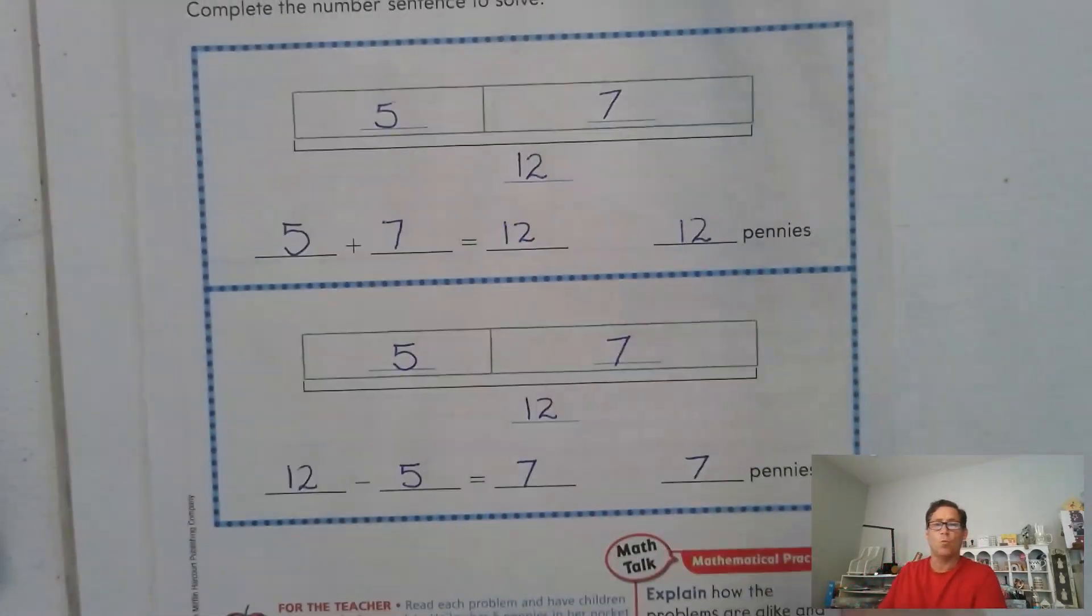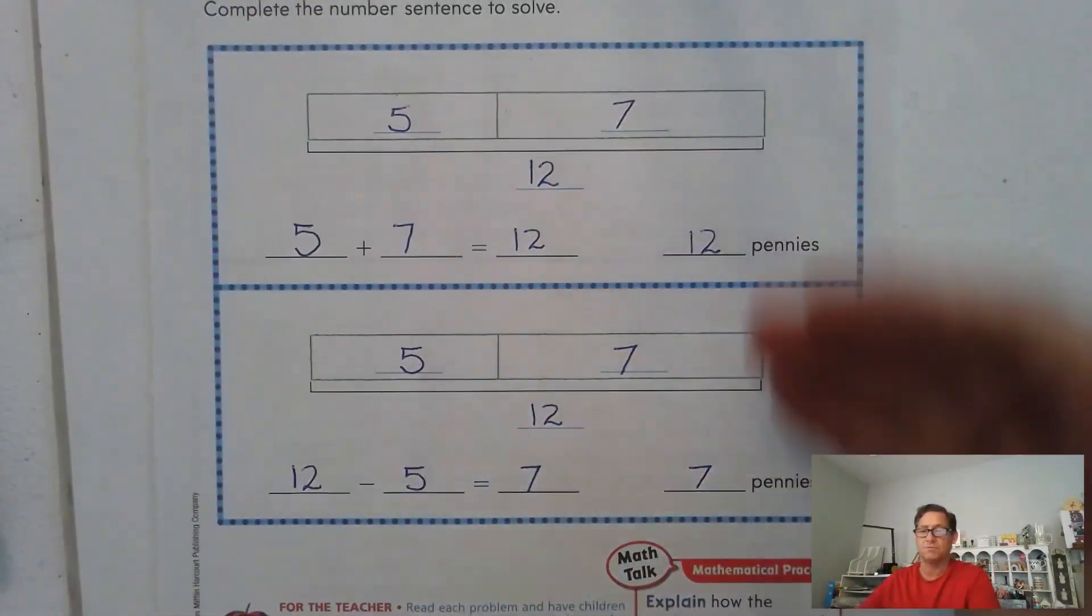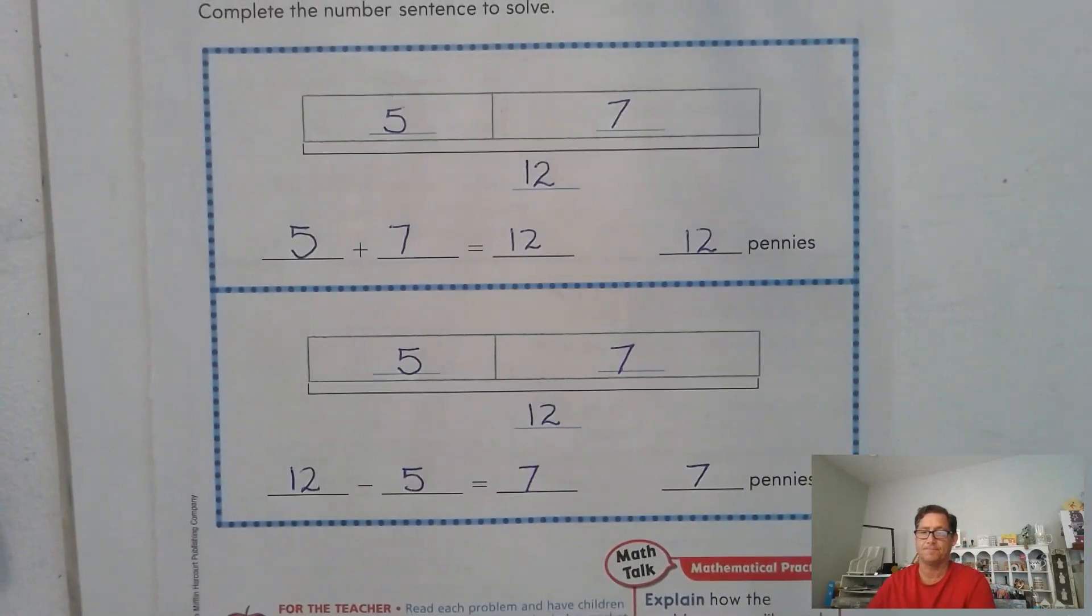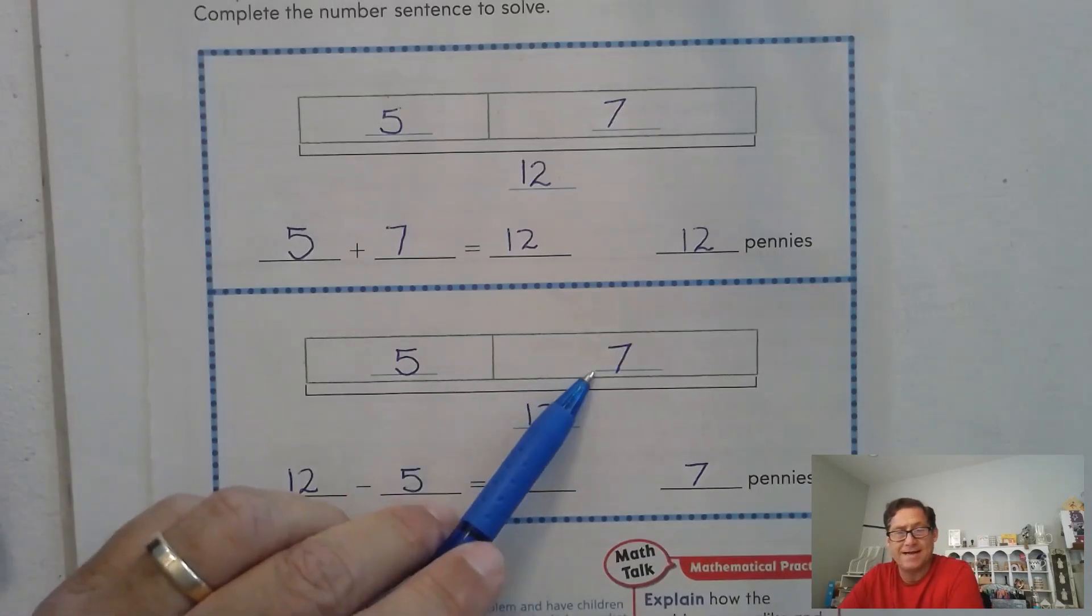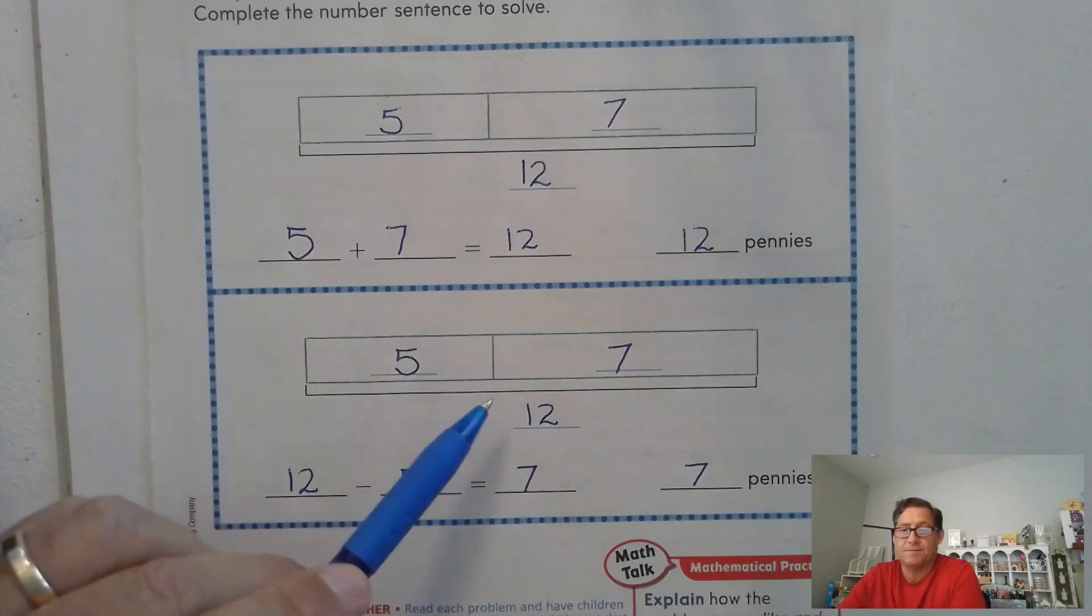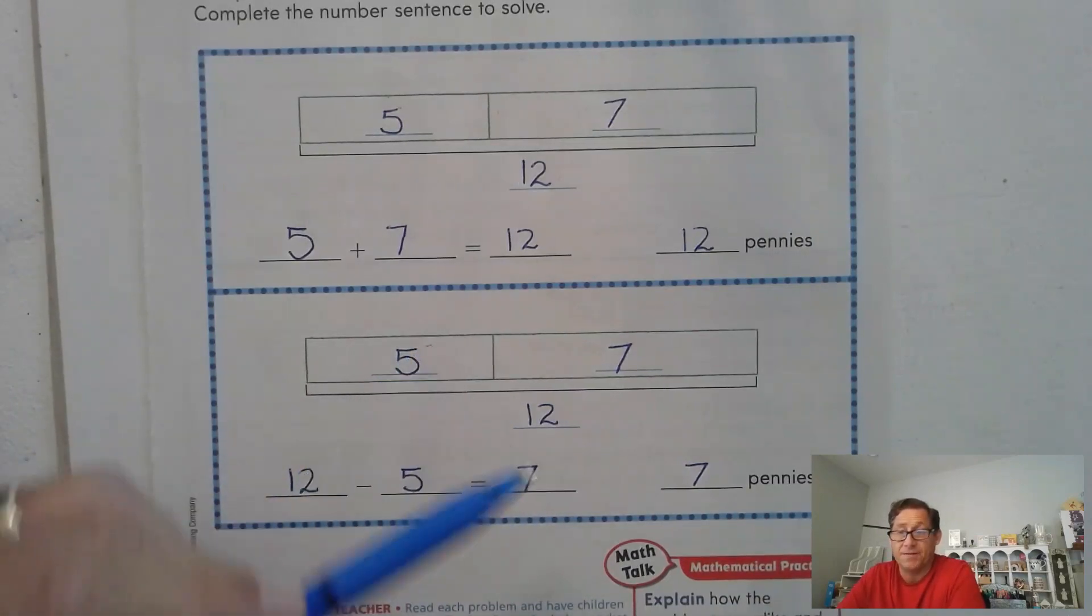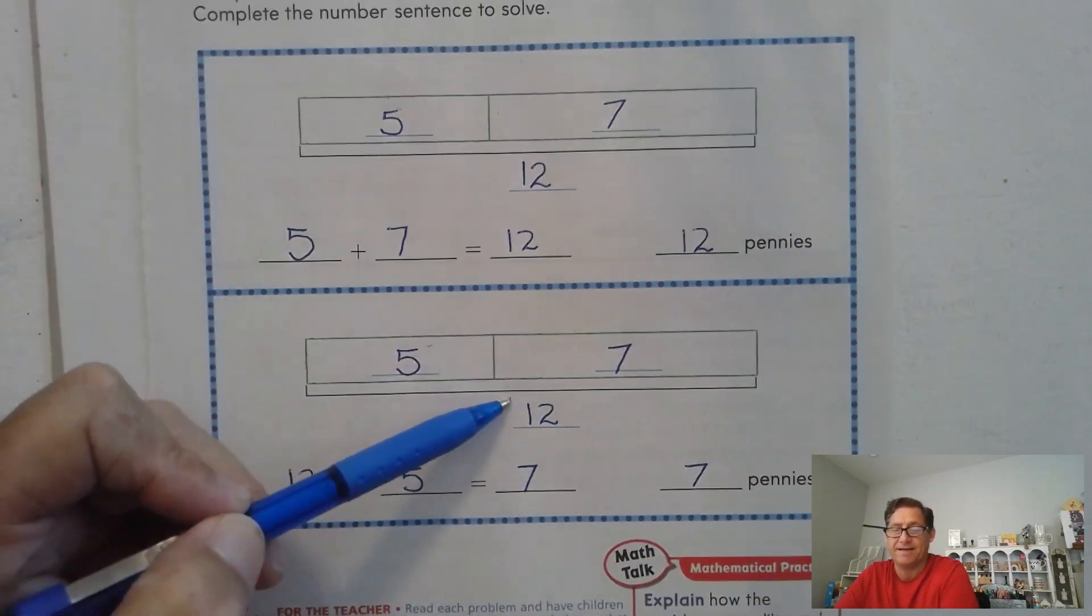Okay, so why do these two bar models look the same? Well, because they represent related addition and subtraction facts. Okay. Remember, if we have a missing addend, we can use subtraction. But think, what is the addition fact that would give me that total?